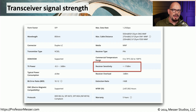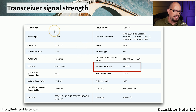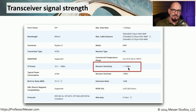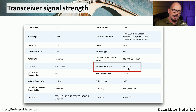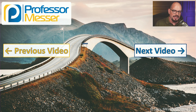Decibels per milliwatt decrease as the signal moves through the media, so sensitivity values will be a negative number. For example, this SFP transceiver at 850 nanometers has a receiver sensitivity of negative 17 decibels per milliwatt. If we calculate our power budget and come up with a received power value of negative 17 dBm or higher, we have a good signal. If we calculate and end up receiving negative 20 dBm, we know we don't have enough power to be received properly on this transceiver.